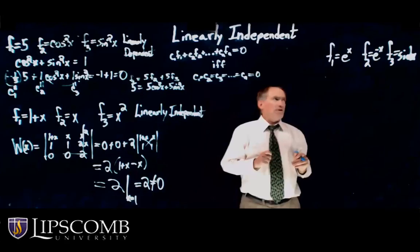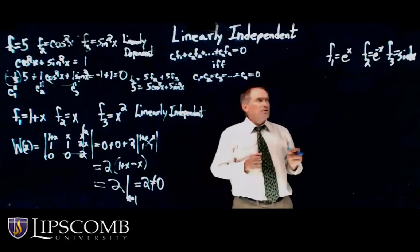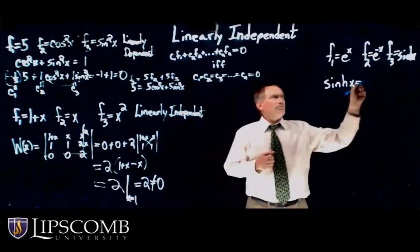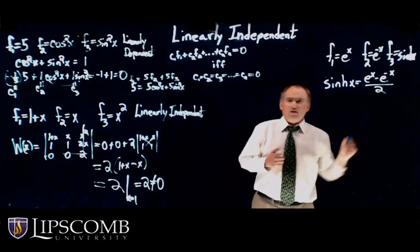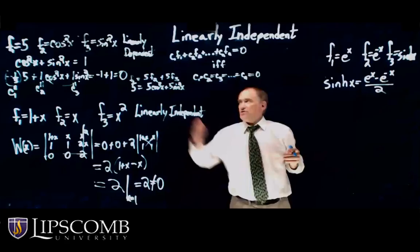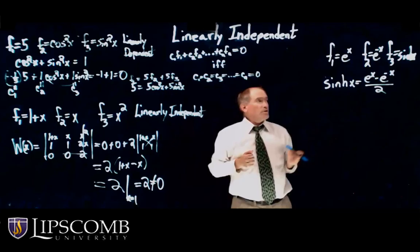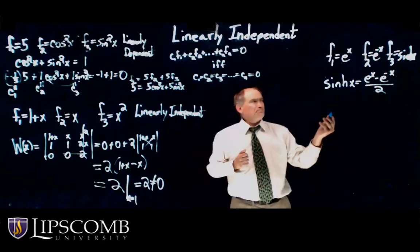Last, I come to this example: e to the x, e to the minus x, and hyperbolic sine, or sinh of x. So if we remember the definition of sinh, I think we're going to see what we can do. Now, we can do the Wronskian here. And just like over here, we could have done the Wronskian, and the Wronskian would have gotten a 0. On this one, we could do the Wronskian and show that it's 0, but how about this?